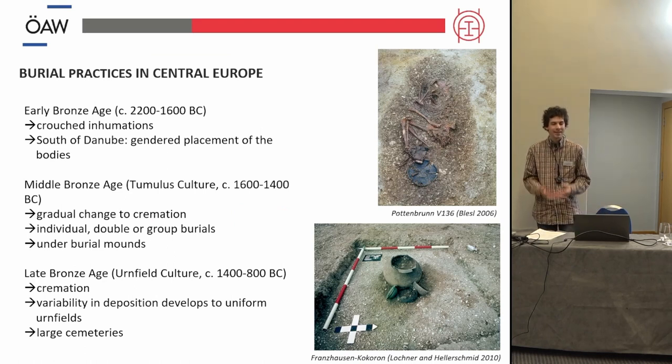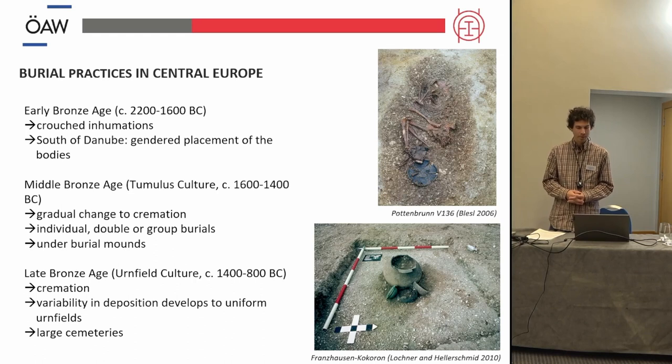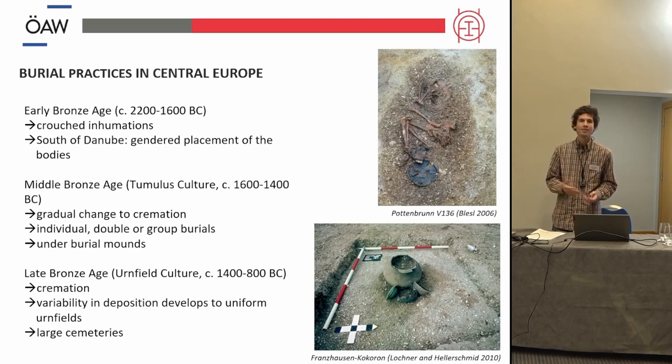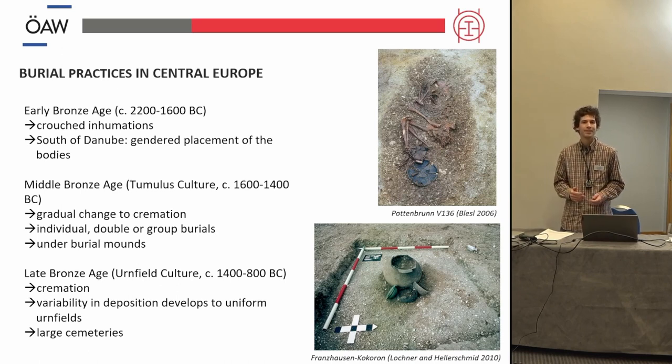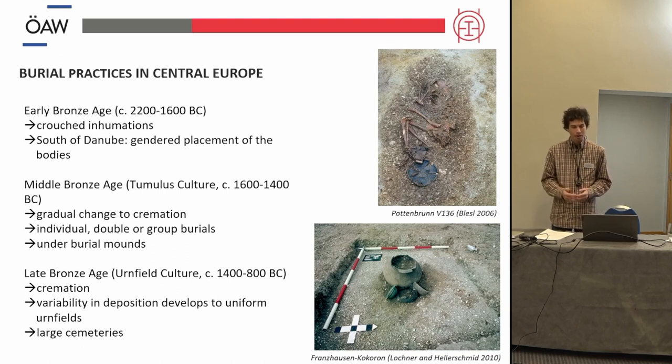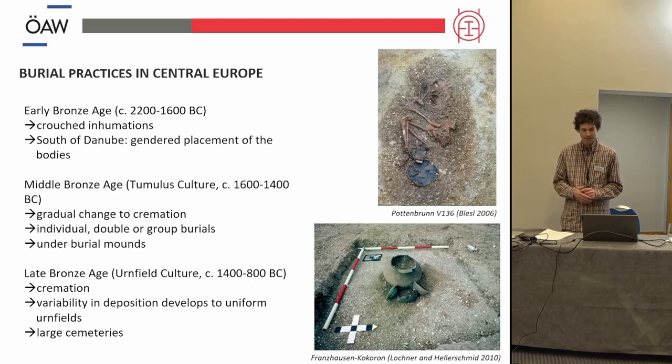Burial practices significantly changed in the Bronze Age in Central Europe. In the early Bronze Age inhumations in crouched positions with gendered placement were typical, where usually males and females were placed with their heads in opposite directions, but all individuals facing into the same direction. In the Middle Bronze Age, there was a transition of the burial practices to tumuli, but already cremation burials can be sparsely seen, until cremations became the dominant burial type in the Late Bronze Age, with large cemeteries of up to several hundreds of individuals which proceeded to the Iron Age.